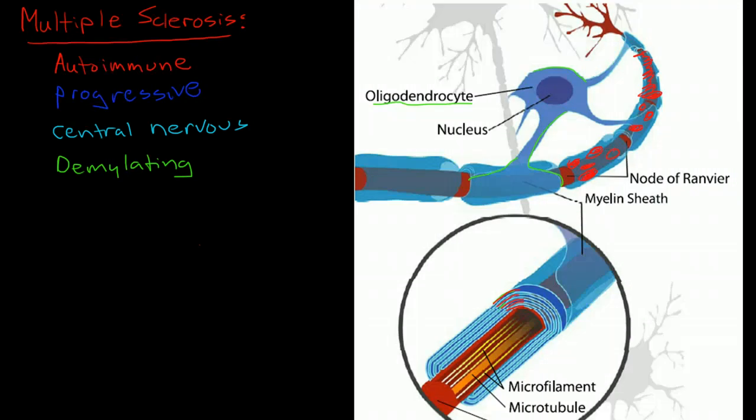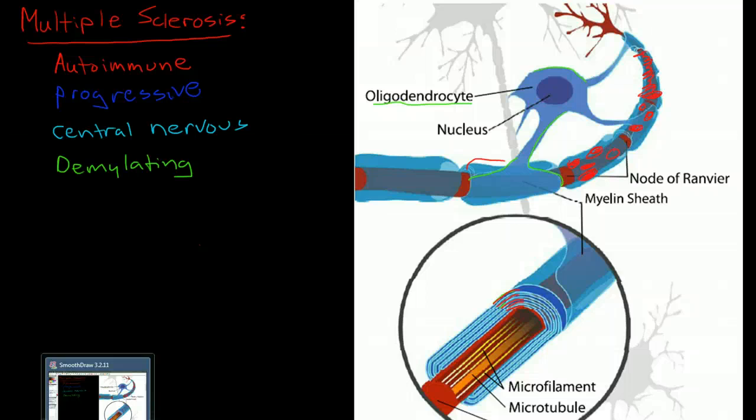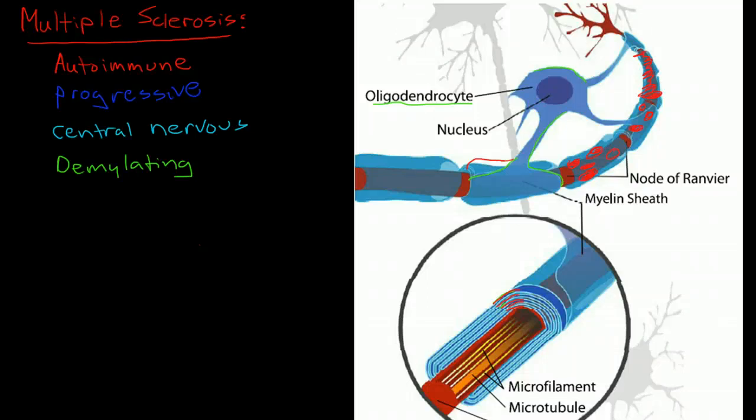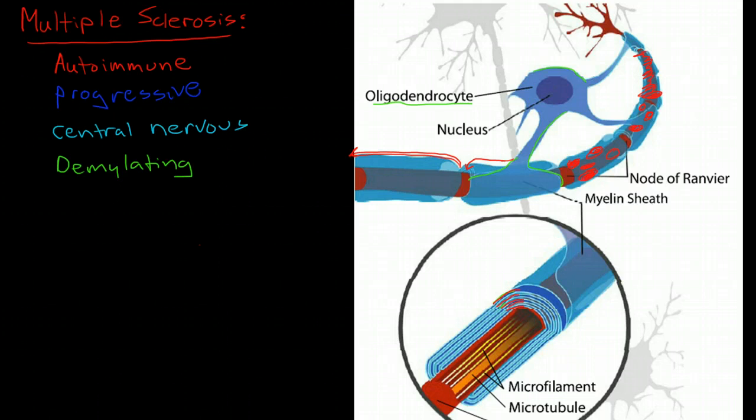Now, remember, the function of a myelin sheath is to speed up the speed of conduction of an action potential. And it does this because the action potential is able to skip from node of Ranvier to node of Ranvier. So when you have large holes and breakdown of the myelin sheath, then you are going to decrease the speed of the conduction of the action potential.